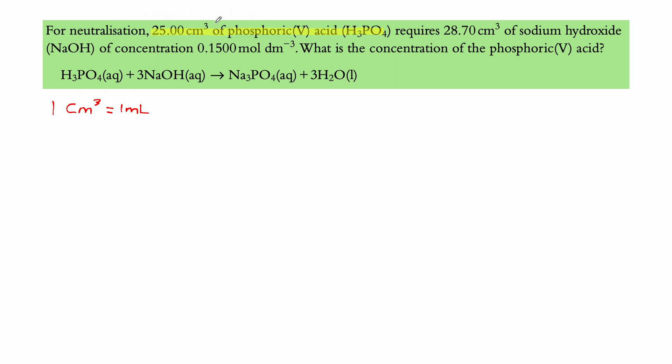So for the neutralization of 25 milliliters of phosphoric acid, it requires 28.70 milliliters of sodium hydroxide. That's our second important point. And that sodium hydroxide used has a concentration of 0.15 mole DM cube. Or in other words, to make things clear, one DM cube is equals to one liter, right? So when we have mole per DM cube, it's the same thing as mole per liter, just more fancy. And it's asking us, what is the concentration of the phosphoric acid H3PO4?